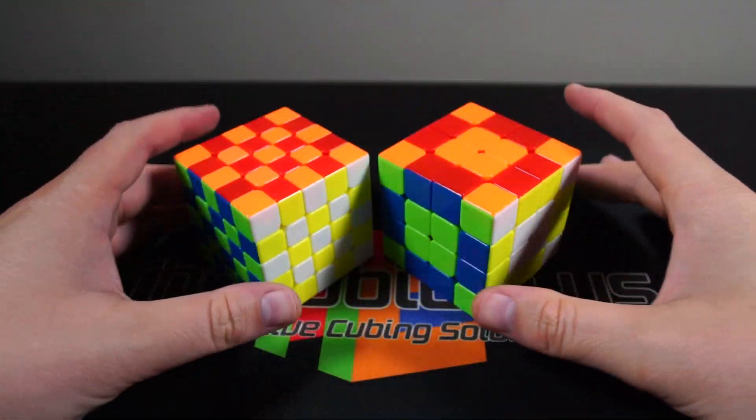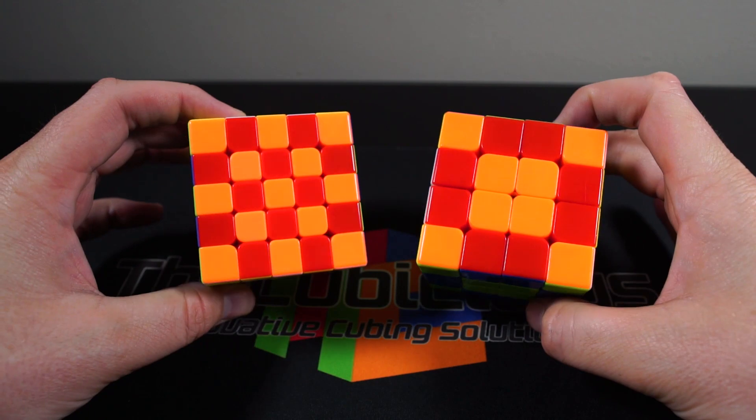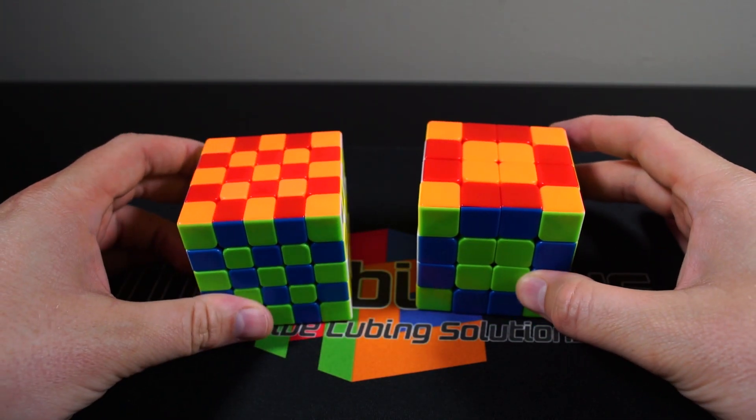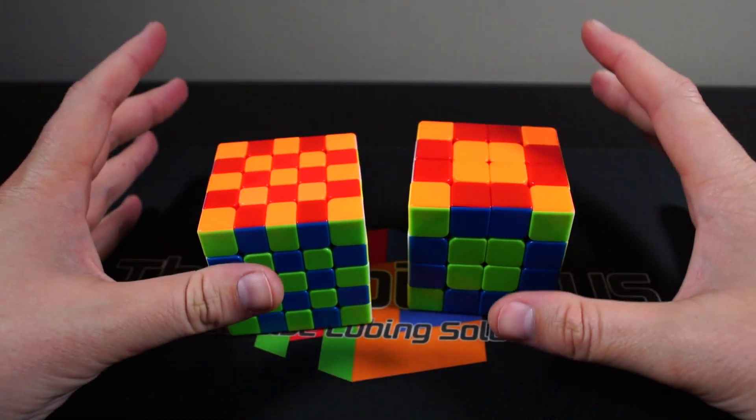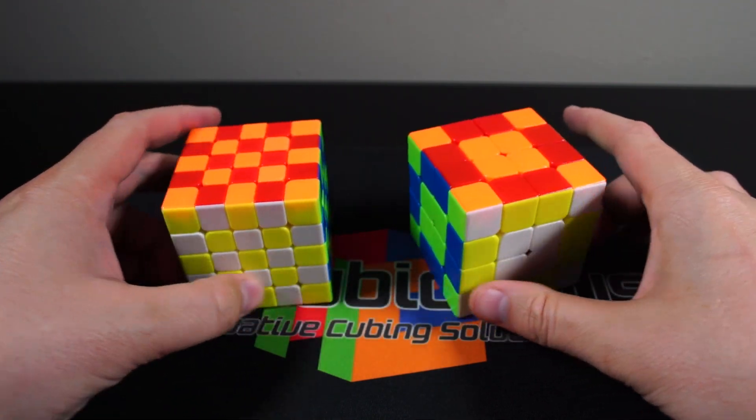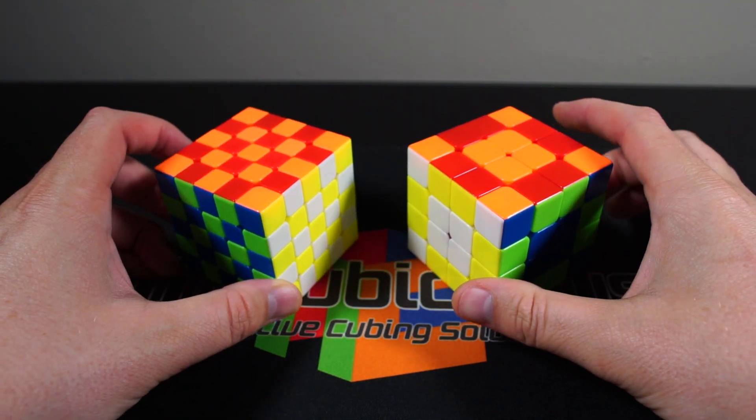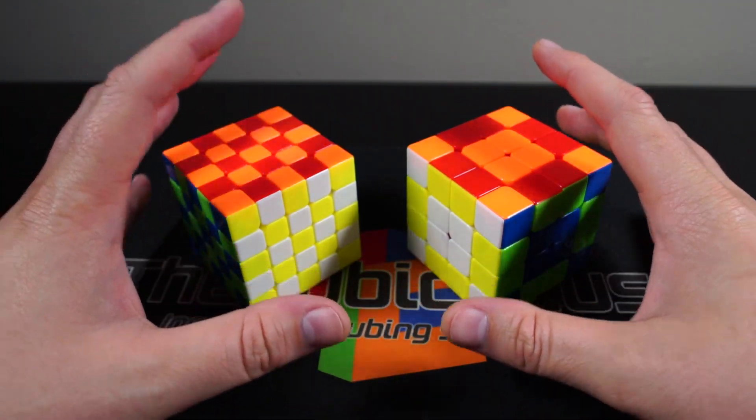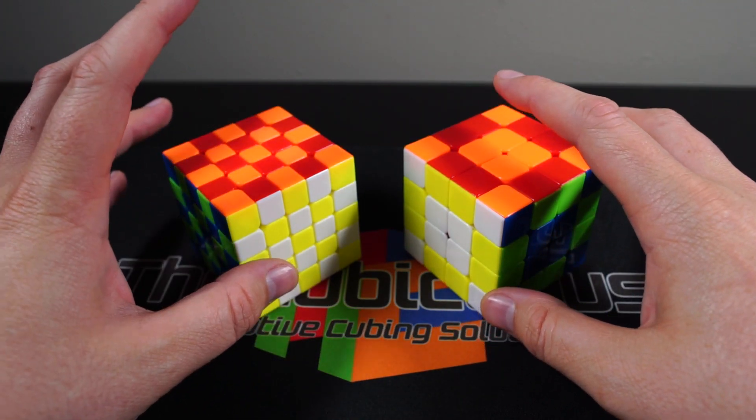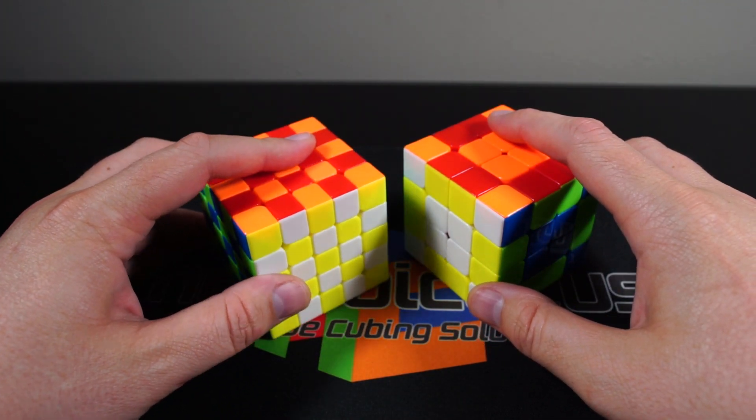Alright, so we've magically transported back to my apartment here. As you can see, I've got the two puzzles in checkerboard patterns because that's the way I like them to be sitting around. I'm going to separate this into two different parts: one on the 4x4 and one on the 5x5. So let's get rid of this one.